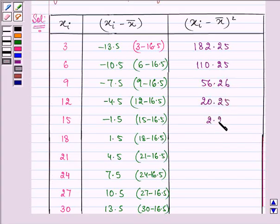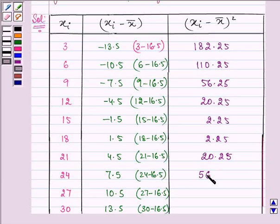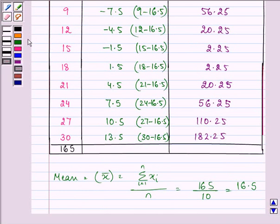Again 2.25, 20.25, here it is 5.25, then we have 56.25, 110.25 and lastly 182.25. Now the sum of xi minus x bar is coming out to be 742.50.